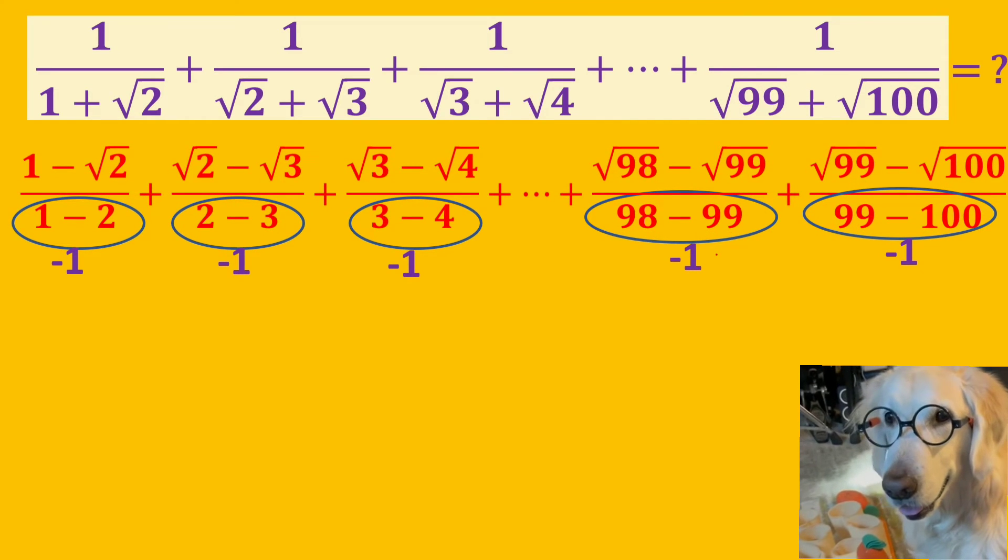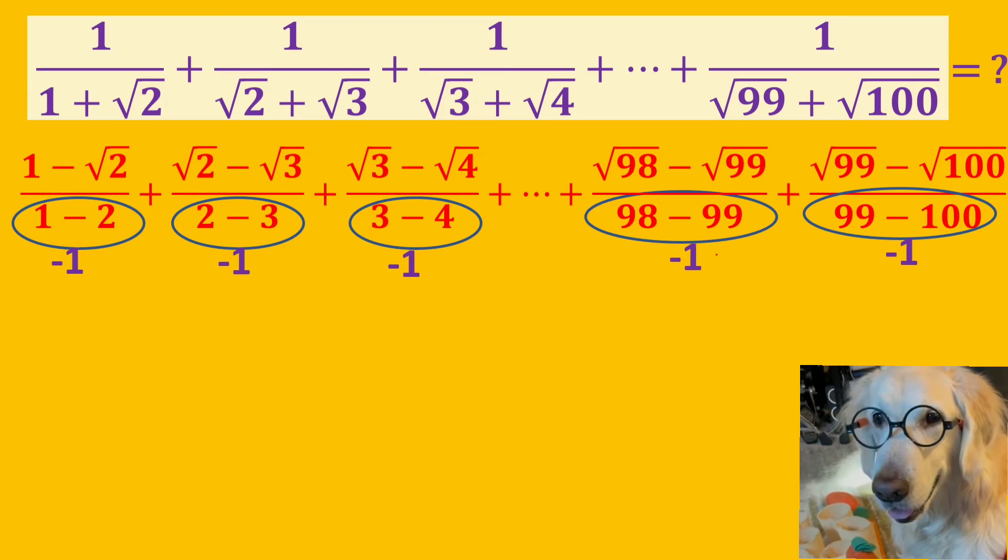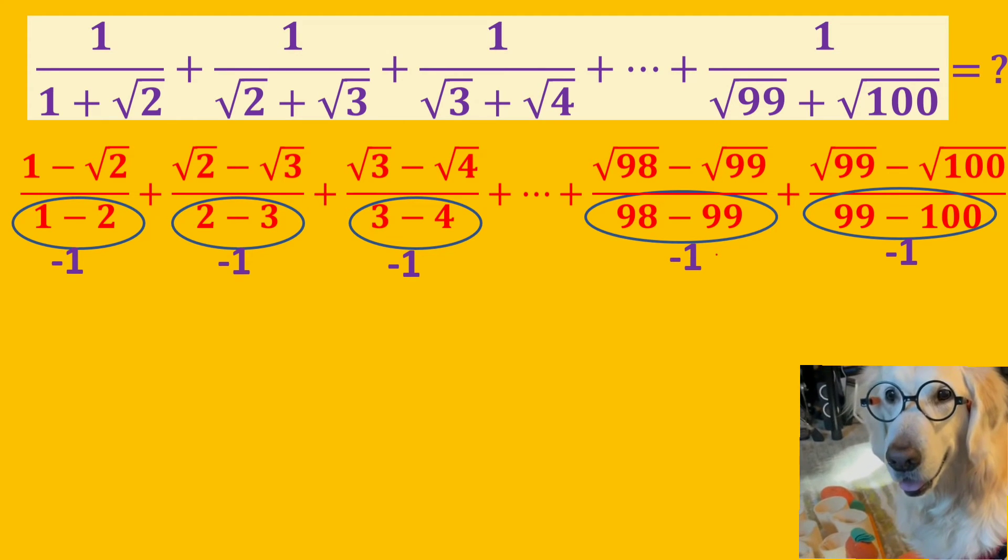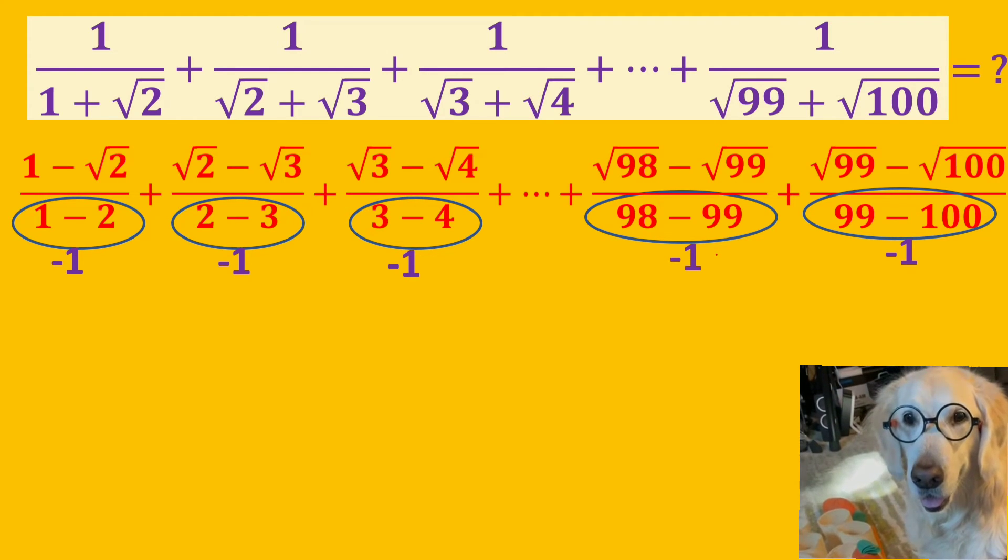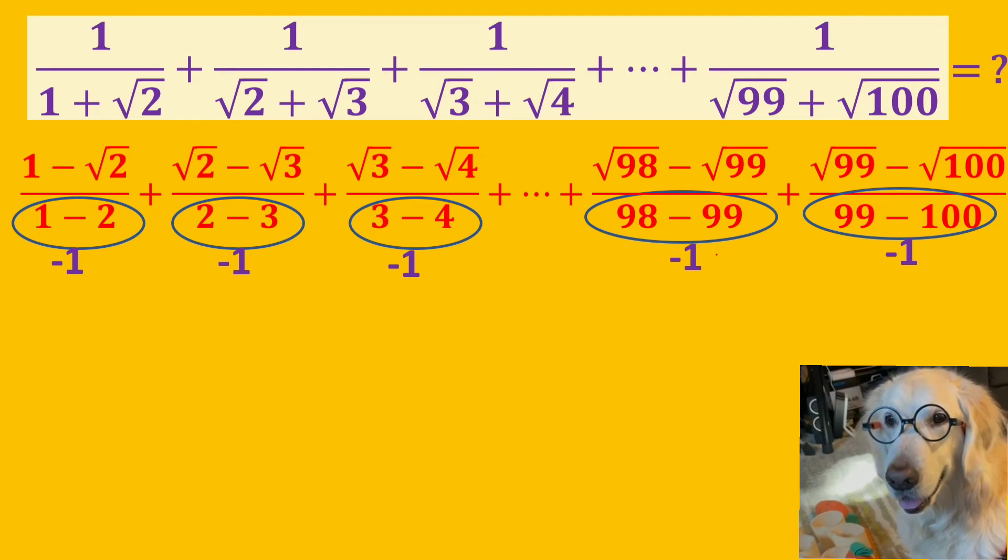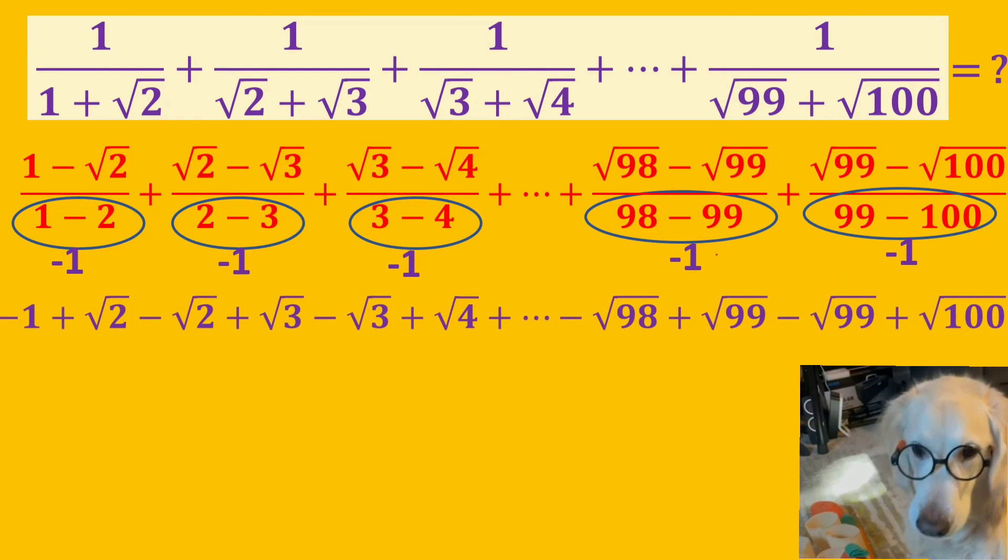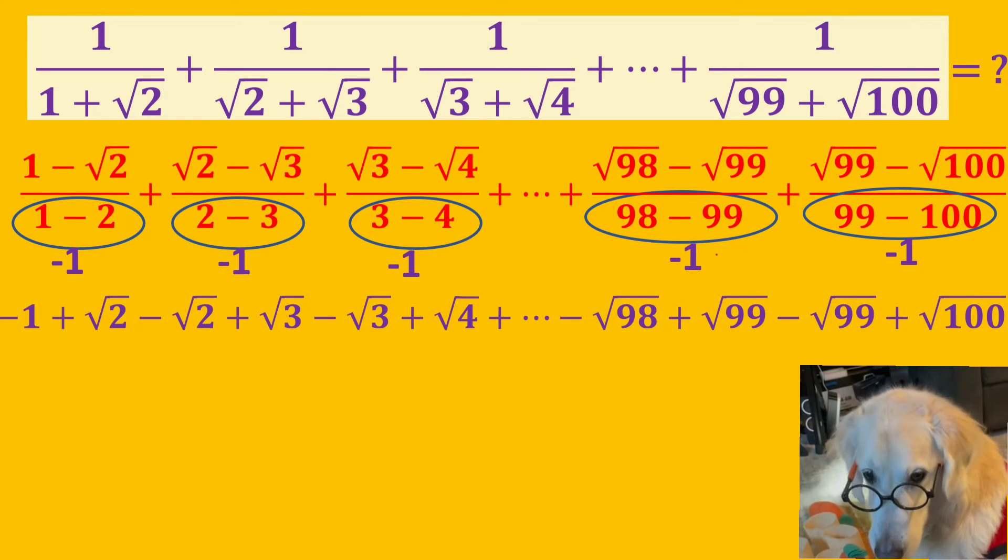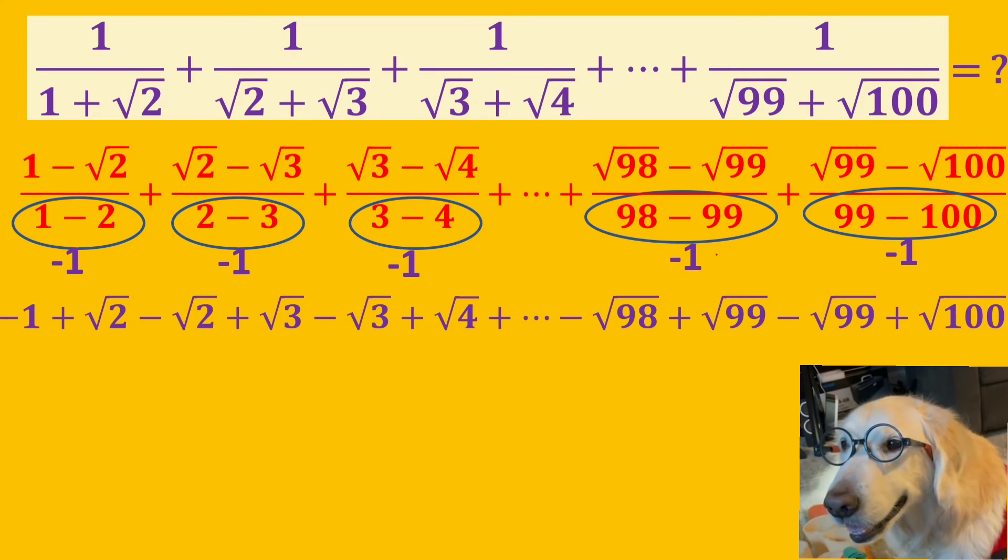Now, all the denominators are equal to minus 1. And we divide all numerators by minus 1.